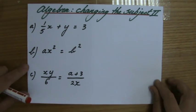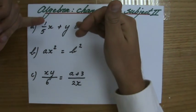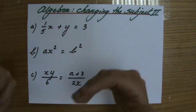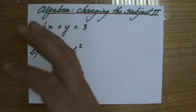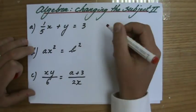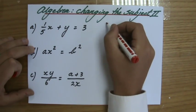Welcome, we're still changing the subject and I'm going to show you three example questions. The objective is to make x the subject, so it has to say x equals and then all the other terms. We have to manipulate each situation.